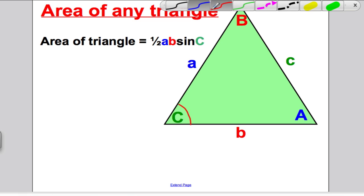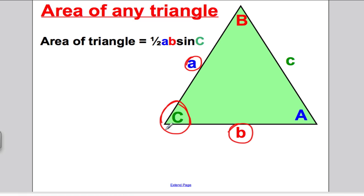What you need to know to be able to do this, you need to be given two sides and the angle in between. If you are, the area of that triangle is simply a half times one of the sides you know, times the other side you know, times sine of the angle in between. Now, it doesn't have to be A, B, and sine of C.